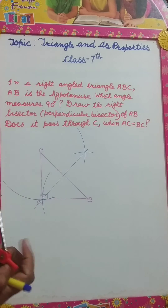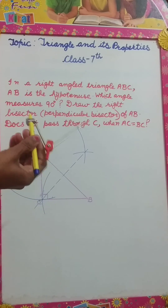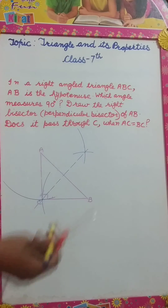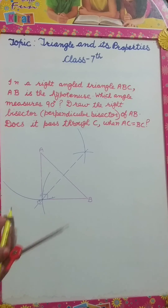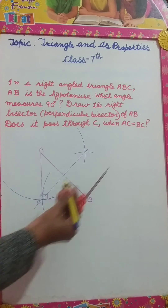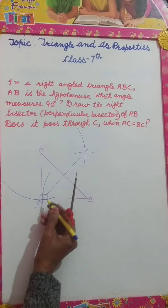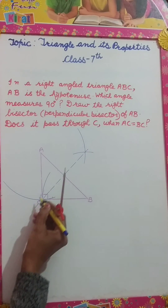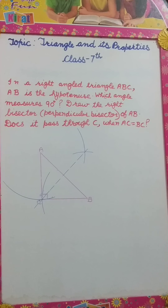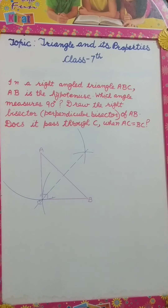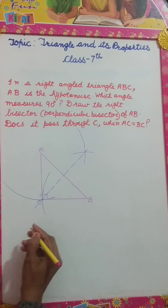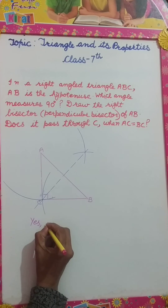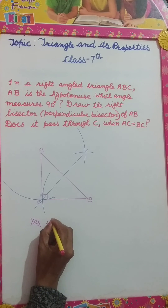Now, what have they asked us? Does it pass through C? Yes, it passes through C. The perpendicular bisector is passing through C. So, yes, it passes through C.